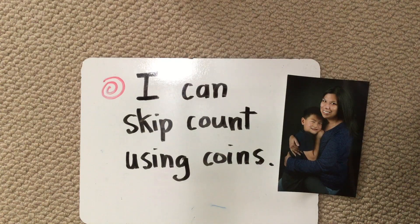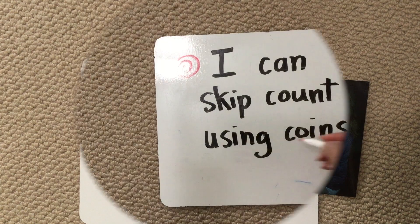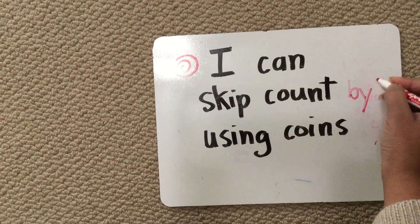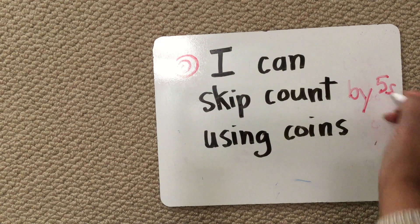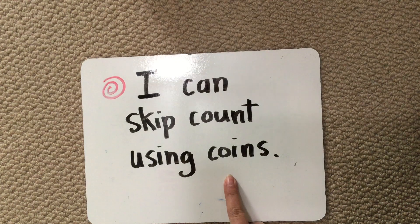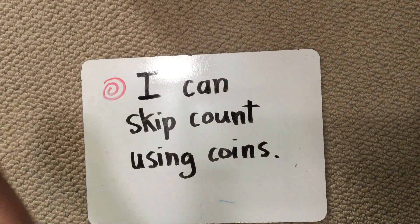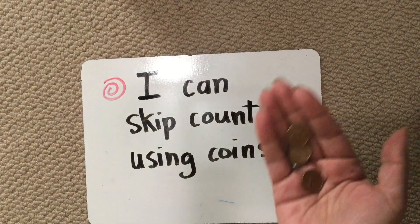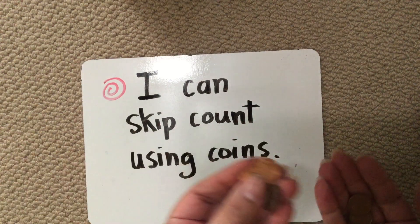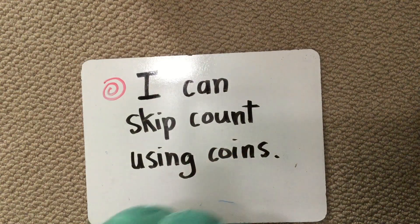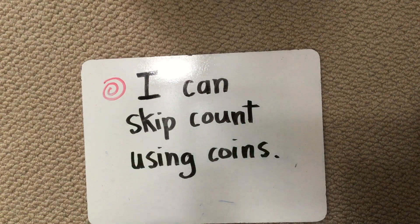Hi crew! It's Miss Zagala here and my son Daniel. I can skip count by fives using coins. Today I took Daniel's play money — some plastic pennies — and we didn't really have enough, so I also looked in my wallet for some coins and checked out Daniel's piggy bank, and we have a collection of pennies.